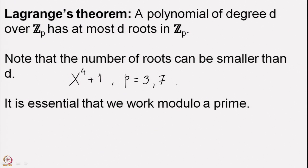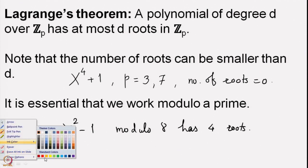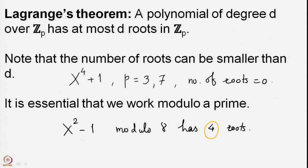We do not get any root here, and therefore the number of roots is indeed less than the degree, which is 0. Whereas if you do not work modulo a prime, we have seen that x^2 - 1 modulo 8 has 4 roots. This number is bigger than the degree d = 2, which is less than 4, the number of roots. So to have Lagrange's theorem it is essential that you work modulo a prime and not modulo a composite number.